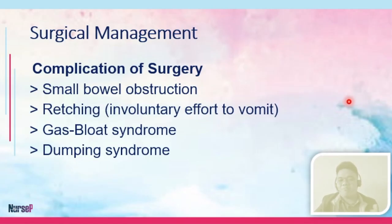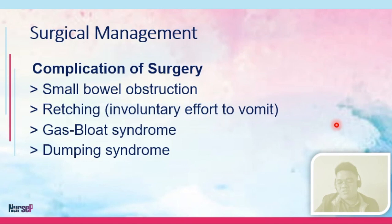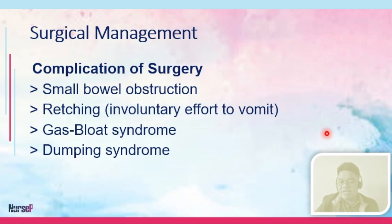Complications after surgery may include small bowel obstruction. Retching, or the involuntary effort to vomit, may also occur. Then there is gas bloat syndrome, characterized by severe air swallowing and an enlarged bubble of gas in the stomach — the patient usually has shortness of breathing, and some consider it comparable to a mini heart attack because of the chest pain it causes. We also have atelectasis, which may be caused by hydrothorax or insufflation of carbon dioxide — commonly done in GI procedures — as well as obstructed NGT and dumping syndrome.